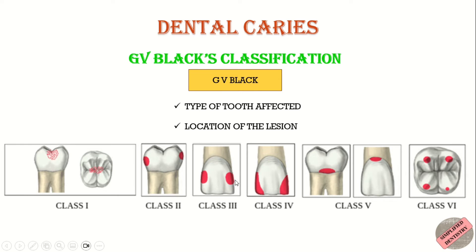So it can include any surface of the tooth — lingual surface, buccal surface, occlusal surface, or proximal surface. Before moving on to the classification, it is very important to have an idea about the surfaces of a tooth. So let's have a look at the surfaces of a tooth.